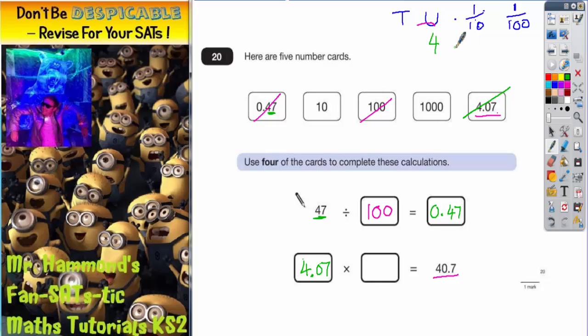So 4.07 and 40.7. I can see that I've gone up here, multiplied by 10. I've gone from the units to the 10s, multiplied by 10. So it is in fact 10 that needs to go in this box.